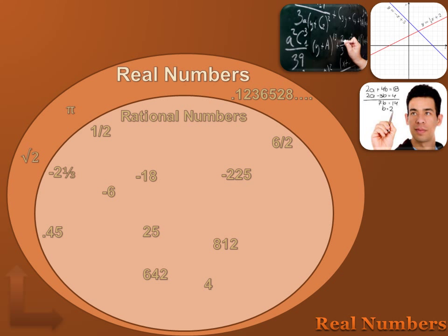Rational numbers are numbers that could be written as a fraction. Outside the rational number circle we've got pi and the square root of 2, and also a decimal like 0.1236528 that goes on forever. The reason those are not rational numbers is they go on forever as a decimal, so you could not find a single fraction to describe them. Pi goes on forever — 3.14 and beyond — so there's no fraction that describes it. The same is true of the square root of 2. But rational numbers are numbers that could be written as a fraction. Obviously one-half is a fraction, but is 25 a fraction? Sure — you could write it as 25 over 1, and it would be a rational number.